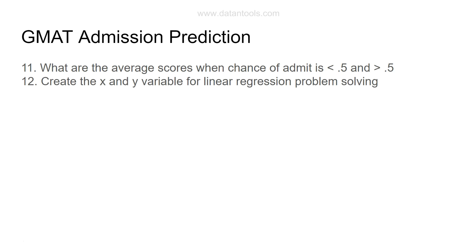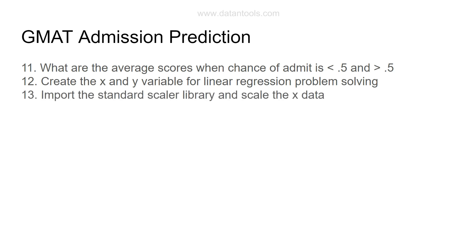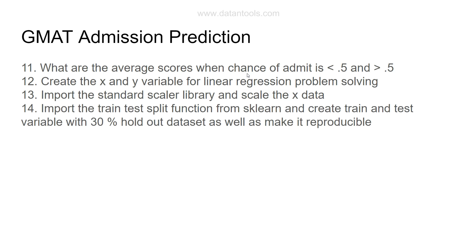Create the X and Y variables for the linear regression problem. Y will contain the chance of admit, and X will contain the remaining variables. Then import the StandardScaler library and scale the X data. StandardScaler helps reduce the effect of very high and very low data points by putting every variable on a standard scale. Import it from within Python's sklearn library.